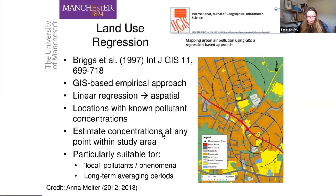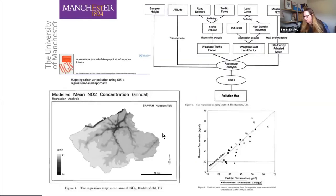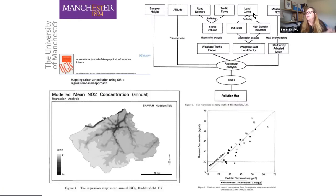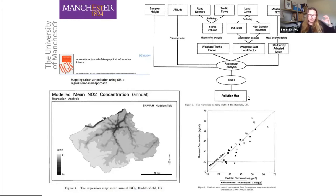Land use regression is essentially a global regression technique — not something particularly sophisticated geographically. However, it was useful because it allowed a single regression equation to be developed and applied to a whole series of different receptor locations, particularly people's homes. It became really popular for that reason. There's a lot of emphasis on buffering: buffering of road traffic flows, road characteristics, and land cover — which is where the 'land use' in land use regression came from.